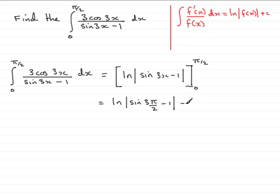Finish the mod sign. And then minus. Then we put the 0 through. So, we have the natural log of the mod of the sine of 3 times 0. That's going to be the sine of 0 minus the 1. And then again, don't forget to close the mod sign off.